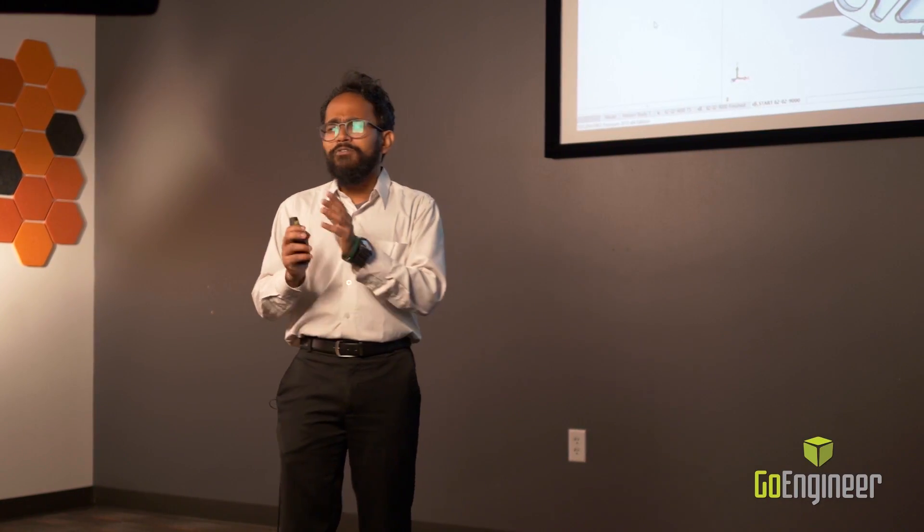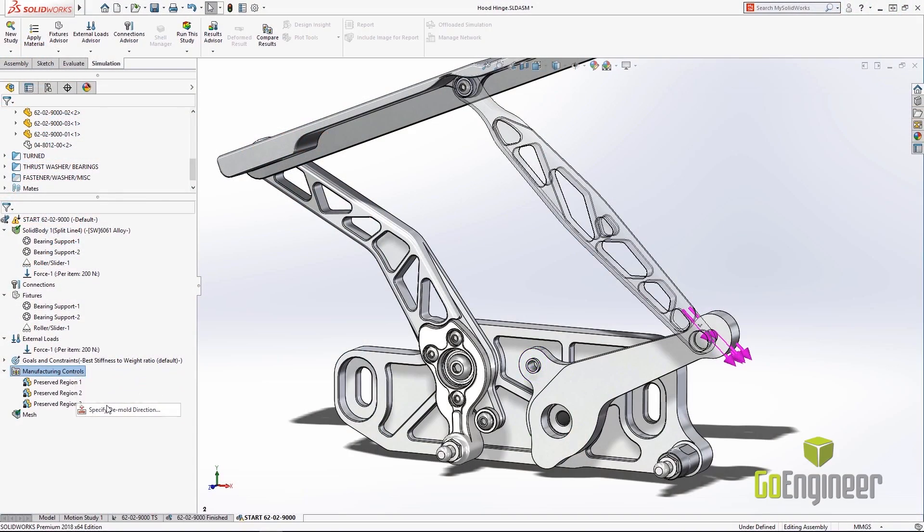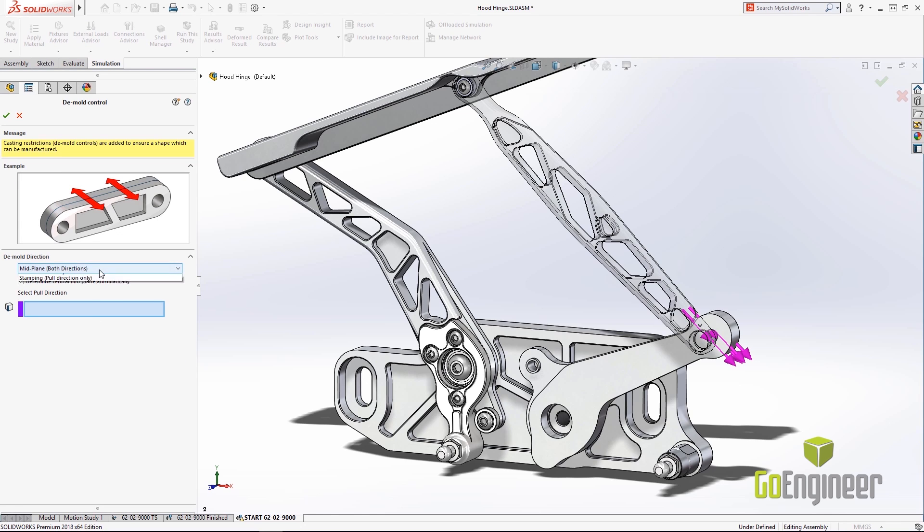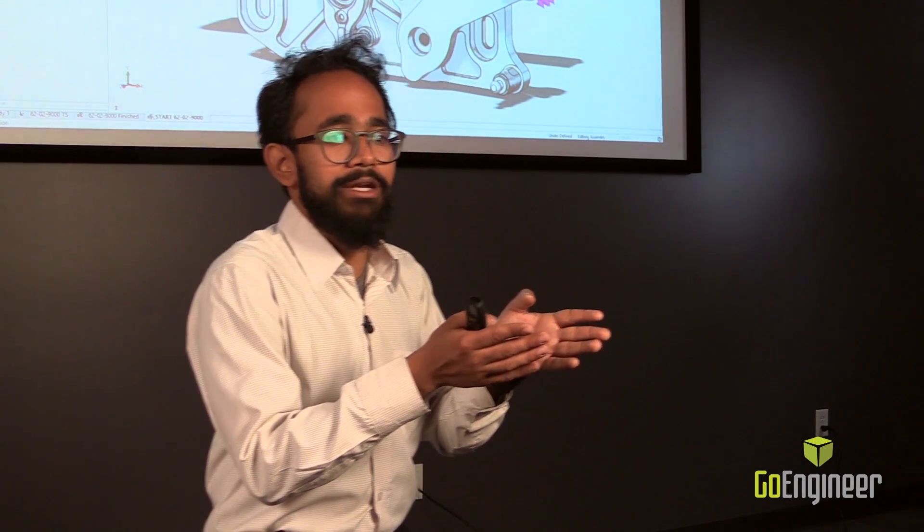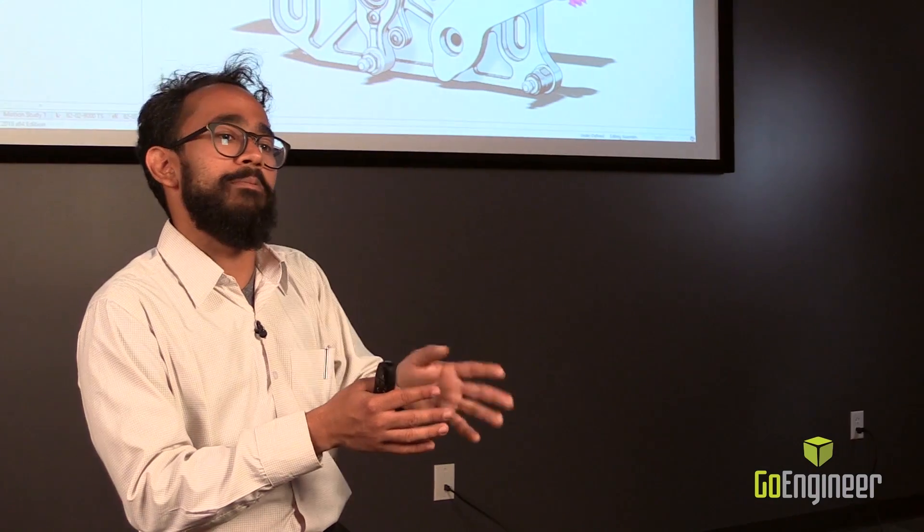You need to impose manufacturing constraints, or the software is going to start removing material from areas that are not manufacturable. If the component is a casted part, you're essentially picking the demold direction. So you pick the parting line and the software will start removing material that facilitates one parting line.